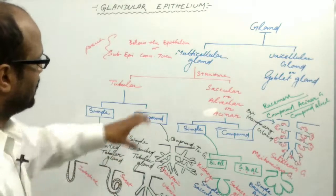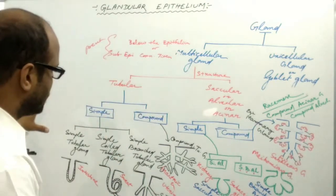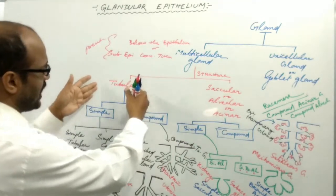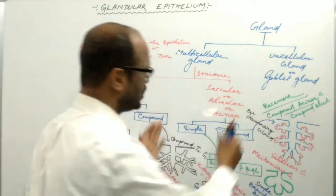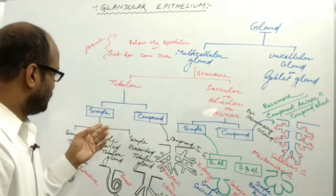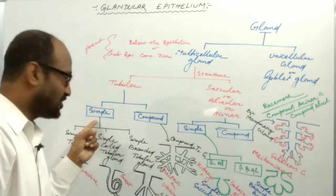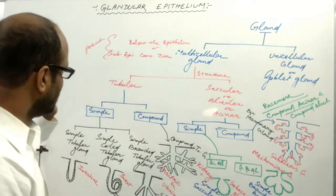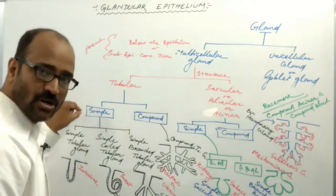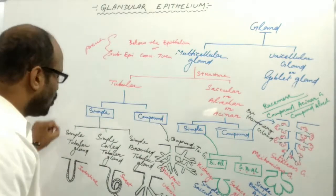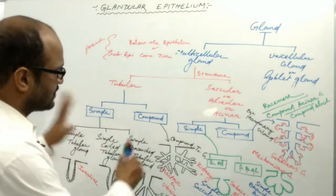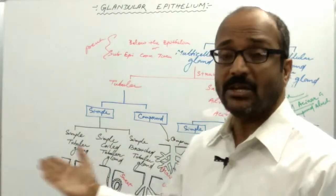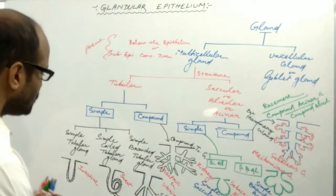On the basis of structure, if it is tubular it is the tubular gland; if it is sac-like it is the saccular gland. If there is a single main duct it is simple; if there are several main ducts it is compound. The simple main duct may be branched or unbranched, giving rise to several gland types.